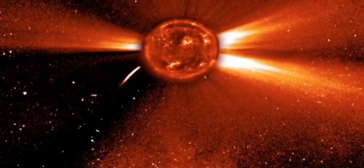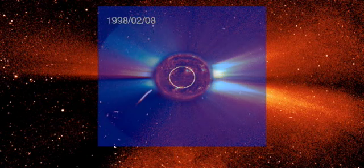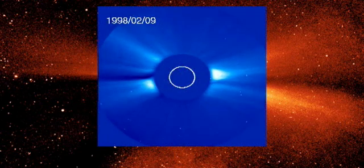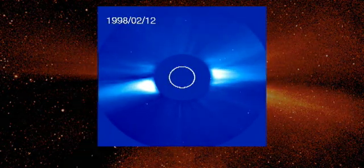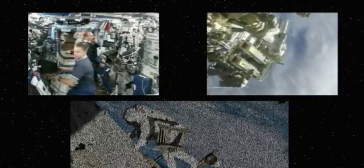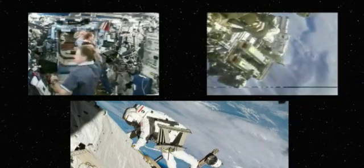Coronal mass ejections cause the beautiful northern lights, but they can also damage satellites, knock out radio communications and cell phones, and cause power outages. They can also be dangerous to astronauts living on the space station. Being able to predict coronal mass ejections will allow us to prepare in advance for such events.